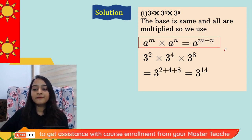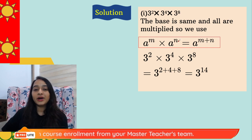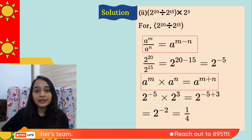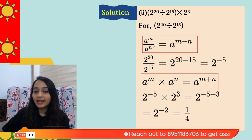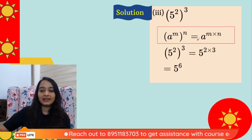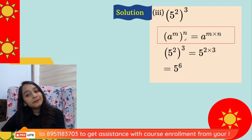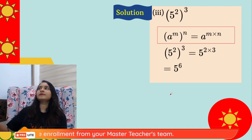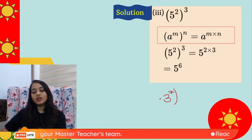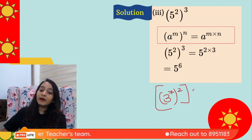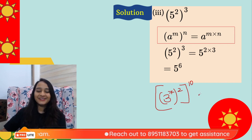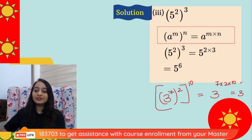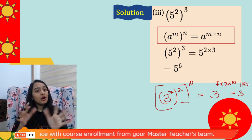Third: using (a^m)^n = a^(m×n), the answer is 5⁶. Law used in Q1: a^m × a^n = a^(m+n). Law used in Q2: a^m ÷ a^n = a^(m−n), then a^m × a^n = a^(m+n). Law used in Q3: (a^m)^n = a^(m×n). For extended cases like (3^7)^2 whole to the power 10, just keep the base and multiply all exponents — 3^(7×2×10) = 3^140.